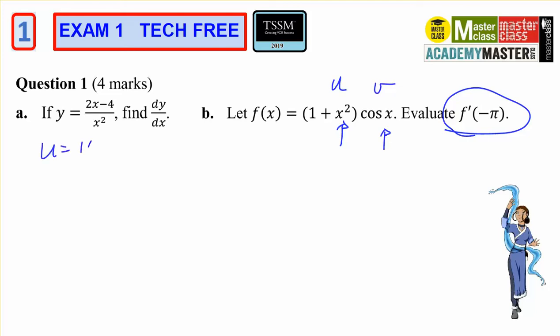u equals 1 plus x squared, u dash equals 2x, v equals cos of x, v dash equals negative sine of x. Check with your VCAA formula sheet.